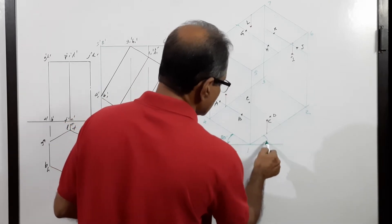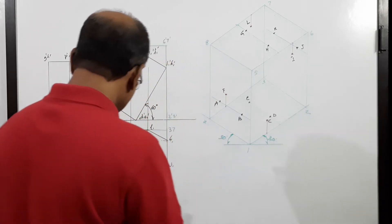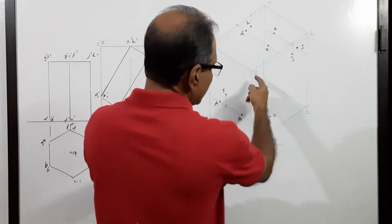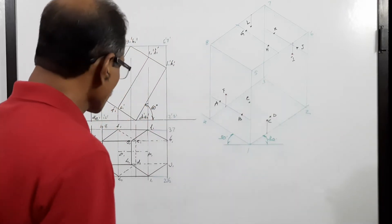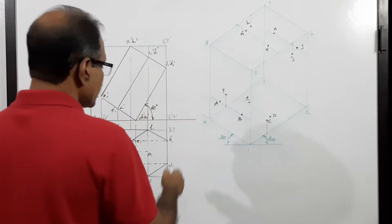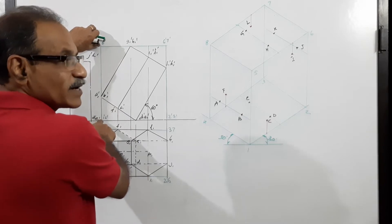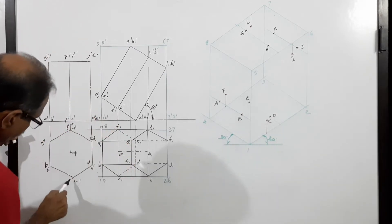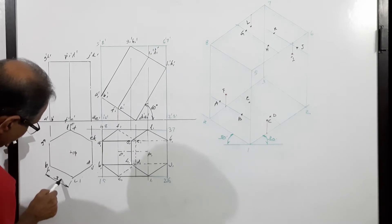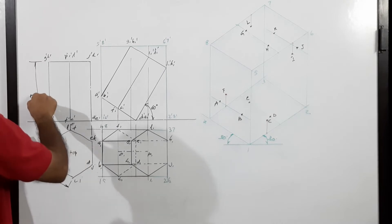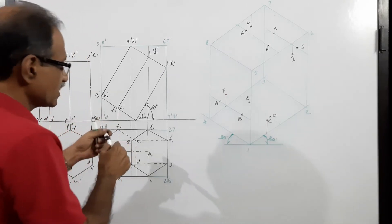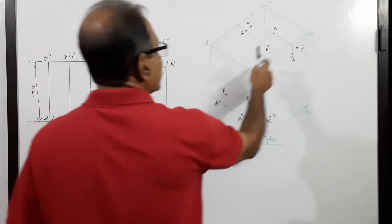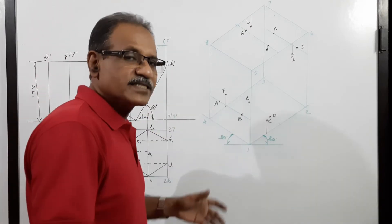Draw two isometric axes at 30 degrees. Take the distance 1-2 and mark it; take the distance 1-4 and mark it; complete the parallelogram 1-2-3-4. Then take the height — this is not the prism height directly; the given dimensions are 30 mm side and 70 mm height. The prism height is 70 and the side is 30, but this side of the box is more than 70. Take that height from all four corners and complete points 5, 6, 7, 8 to form the box.